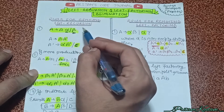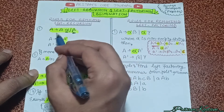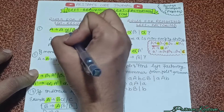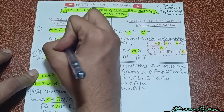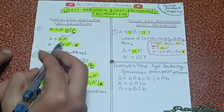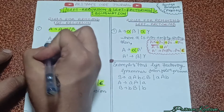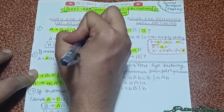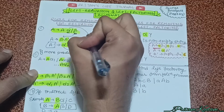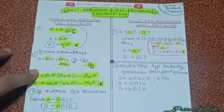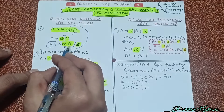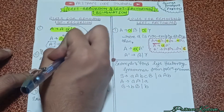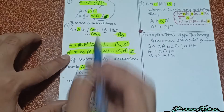These are the rules for removing the left recursion. We have the grammar A → Aα, and there is recursion of A. We will first write beta here and then A'. To remove this left recursion, I will write the remaining part, that is alpha, and A', and then epsilon also.